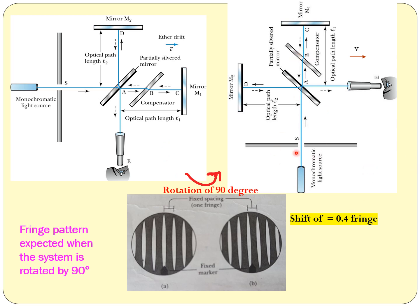We will calculate the time difference in horizontal and vertical paths before and after the rotation. The total time difference will create a path difference, and this path difference will create a change in the fringes. It should come out to 0.4 fringes, but they never observed it. So we will also look at the calculation part.